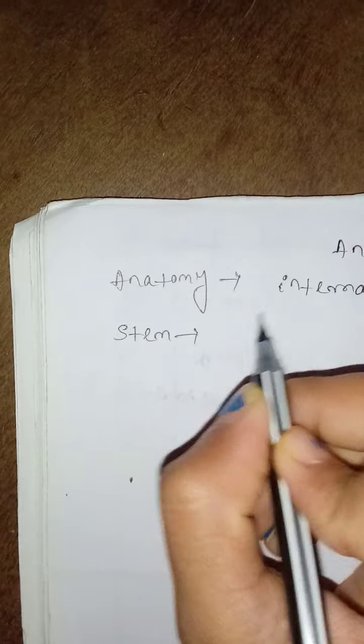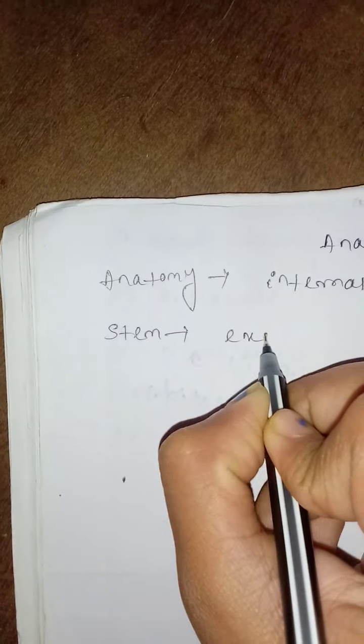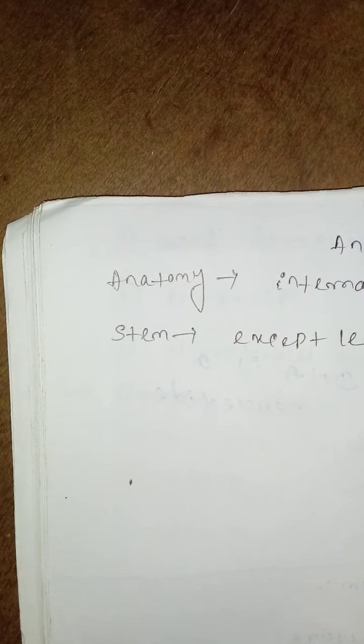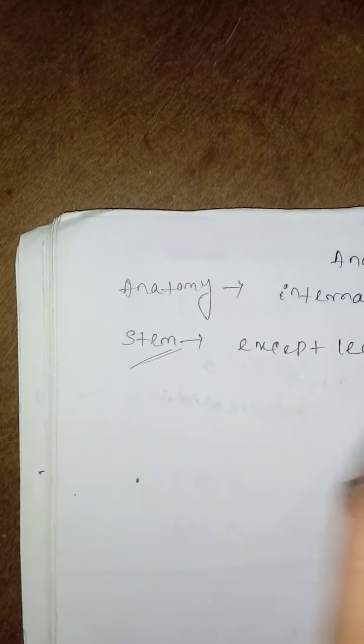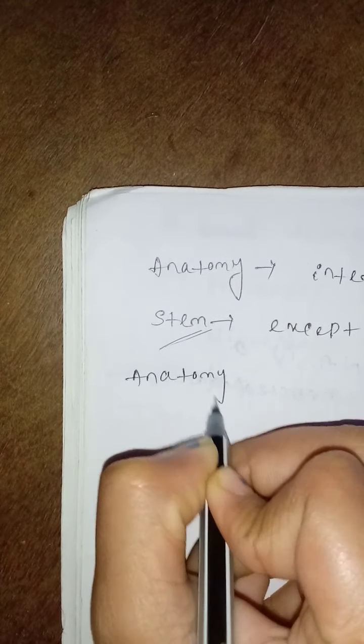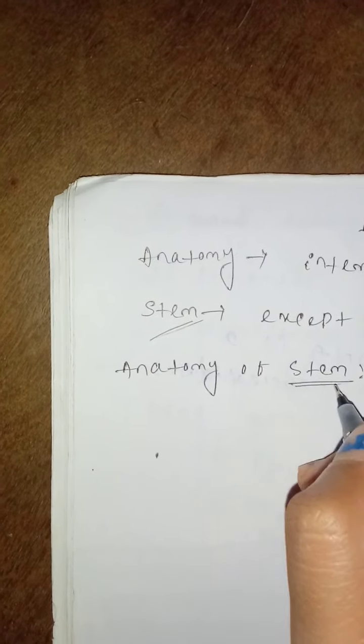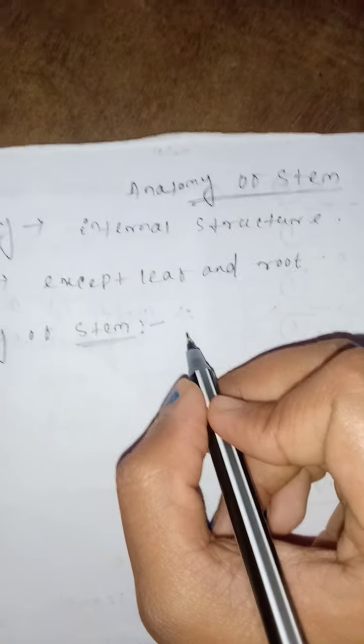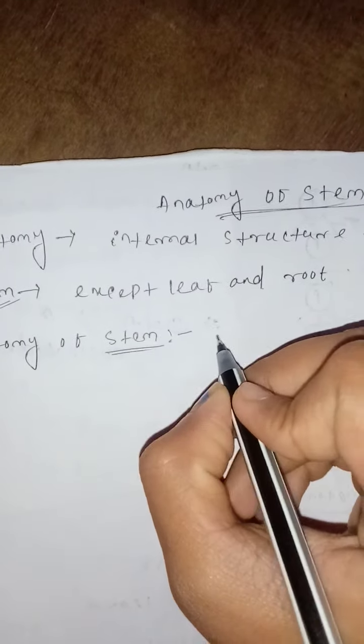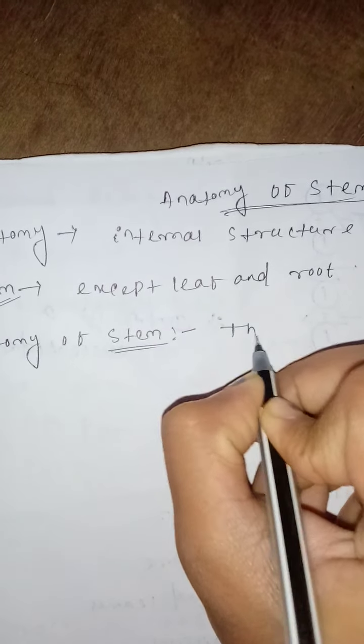The second term is stem. Stem means except leaf and root — the total plant body is known as stem. So the third term is anatomy of stem: the study of internal structure of stem is known as anatomy of stem.